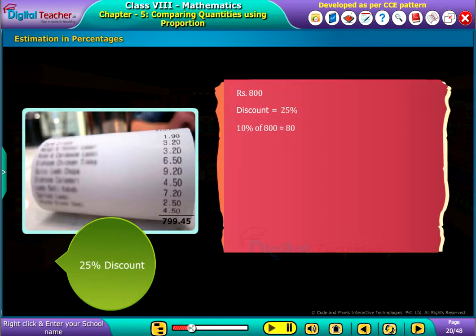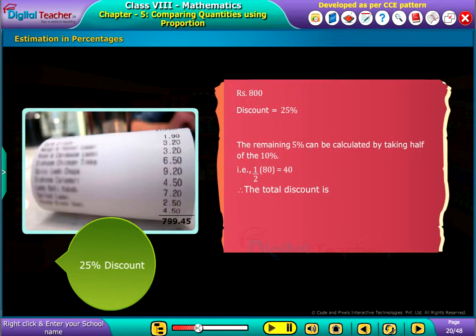Then the 20 percent of the amount will be double the amount of 10 percent, that is 80 plus 80 equals 160. The remaining 5 percent can be calculated by taking half of the 10 percent, that is half of 80 which is equal to 40. Therefore the total discount of 25 percent is equal to 20 percent plus 5 percent, which is equal to 160 plus 40, that is rupees 200.